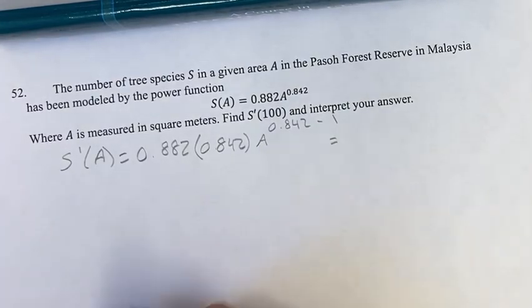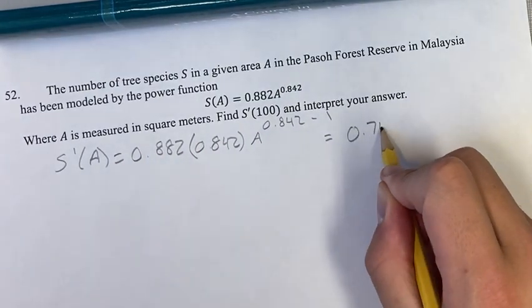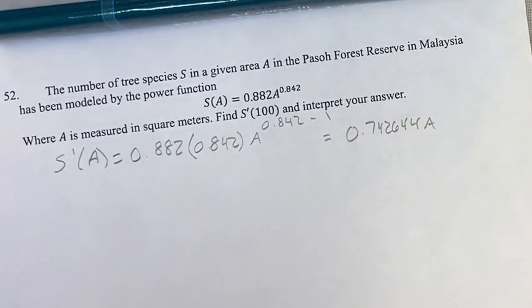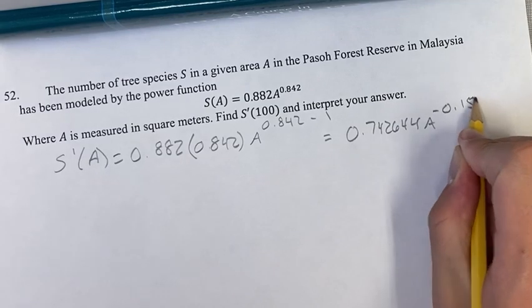So just simplifying this here, this is going to come out to 0.742644. Then we have a evaluating this to the negative 0.158.